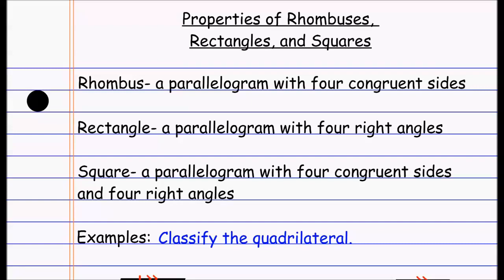In this lesson we're looking at properties of rhombuses, rectangles, and squares. There's a common theme: each of these is really a parallelogram. A rhombus is defined as a parallelogram with four congruent sides, a rectangle is a parallelogram with four right angles, and a square is a parallelogram with four congruent sides and four right angles. Since all of these are parallelograms, they have all the properties of a parallelogram, but they also have some special properties of their own.